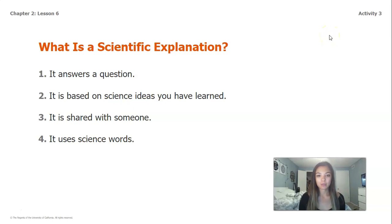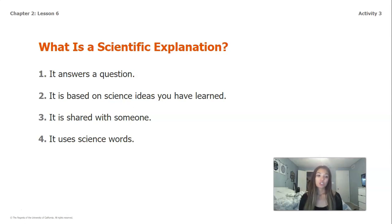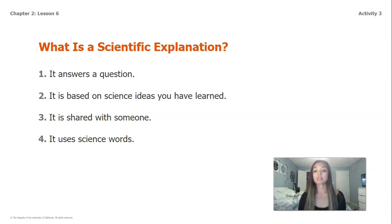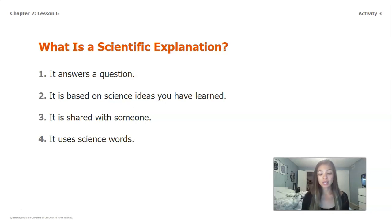First off, what is a scientific explanation? There are a couple of different important pieces to writing a good scientific explanation. Number one: it answers a question. Number two: it's based on science ideas that you have learned — things we've talked about in our slides, things we've read about, models, and investigations that we've done. Number three: it's shared with somebody. And number four: it uses science words or vocabulary that we've gone over throughout the lesson.